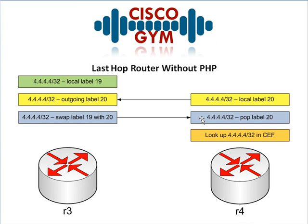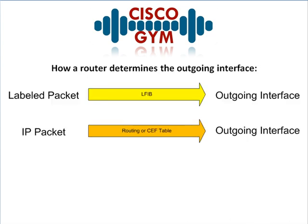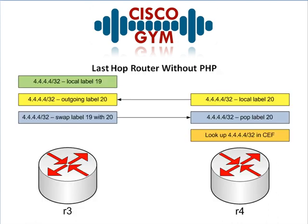Now back at R4 — a packet comes in with label 20. R4 says: I know what that label is, that's label 20. This is the end of the line; there's nobody else giving me labels for this because it's directly connected. So what I do is pop this label. I've got this packet, I pop off label 20. But now I've got a packet with no label on it. So going back to the review: labeled packet — look it up in the LFIB; unlabeled packet — look it up in the CEF table. So R4 does a second lookup, goes to the CEF table, which says: yeah, that's your loopback zero interface, send it out.